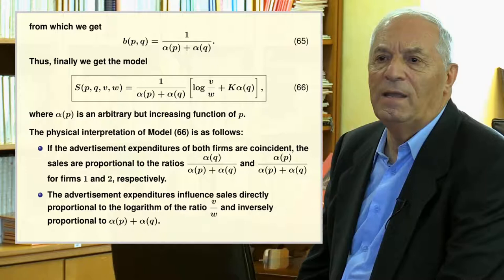The physical interpretation of Model 66: if advertisement expenditures for both firms are coincident, the sales are proportional to the indicated ratios for firms 1 and 2. The advertising expenditure's influence on sales is directly proportional to the logarithm of the ratio V over W and inversely proportional to alpha(P) plus alpha(Q).